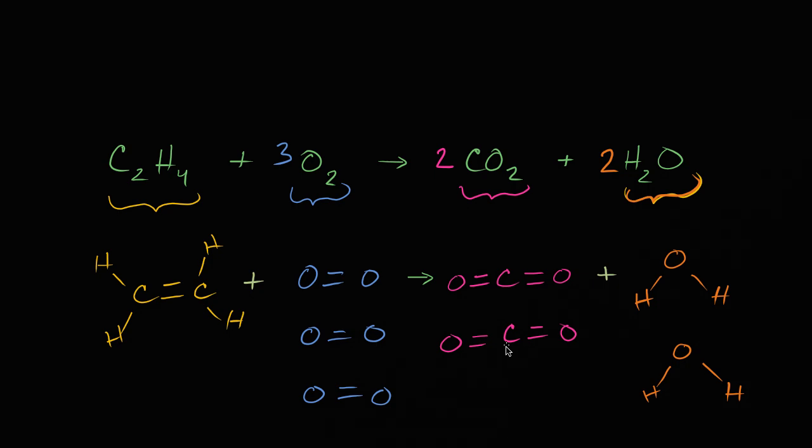We have two carbon atoms on both sides. We have four hydrogen atoms on both sides. Here they're in the ethylene. Here they're in the waters. And then we have six oxygen atoms on both sides. And here they're, some of the oxygens are in the carbon dioxides.